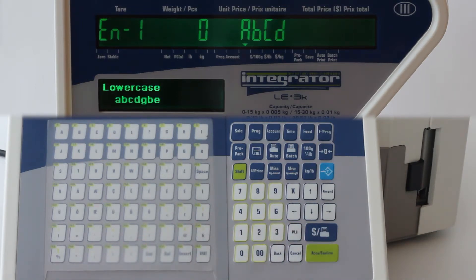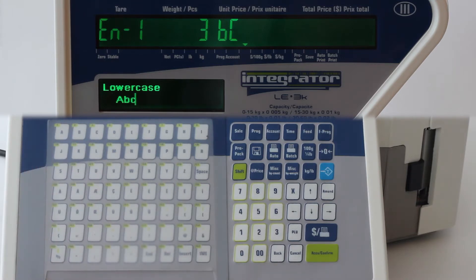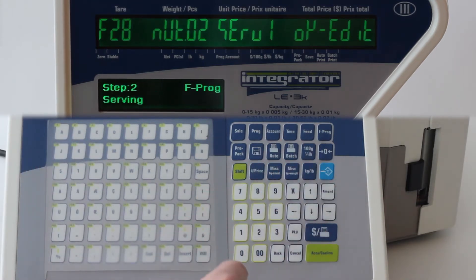Use the N key to erase text that appears after the cursor. Use the shift key to change the case for a single character. Once you are done, press the amend key and the right arrow key to define the serving size metric.